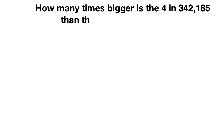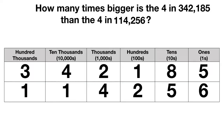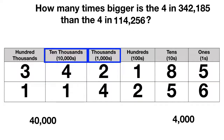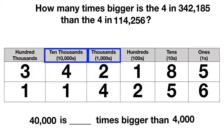Now it's time for you to practice on your own. How many times bigger is the 4 in 342,185 than the 4 in 114,256? On a place value chart, put the first number on top and the second number on the bottom. The 4 in the first number is in the 10,000s place — it has a value of 40,000. In the second number, the 4 is in the thousands place, with a value of 4,000. These place values are right next to each other, so 40,000 is 10 times bigger than 4,000.